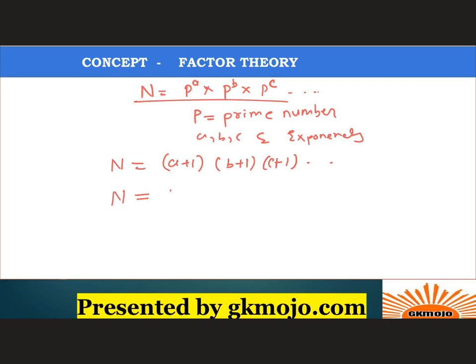The product of all factors is given by N to the power X/2, where X is the total number of factors. Keep this formula in mind — this is the total number of factors formula and this is the product of all factors formula.